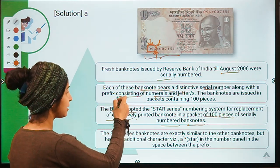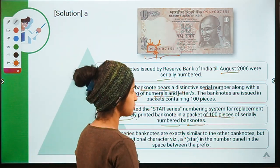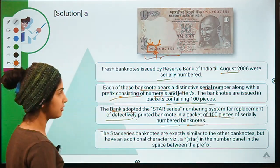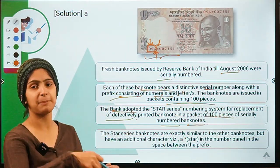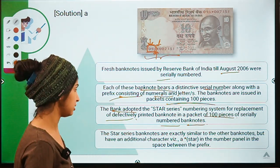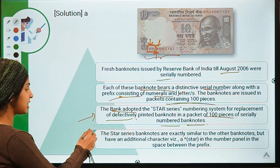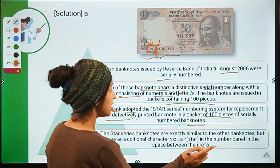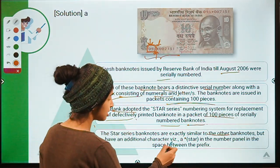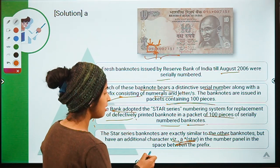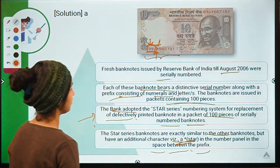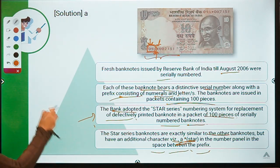Star series bank notes are exactly similar to other bank notes — no change at all — except for this star or asterisk in the number panel, in the space between the prefix. That is why we call them star series bank notes.